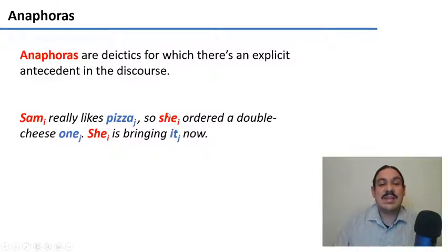So words like she and it are anaphoras, because somewhere before we got a clue as to what she and it actually are.